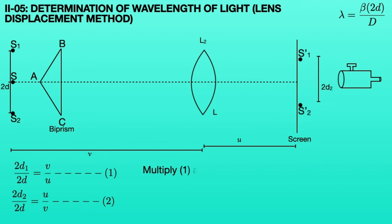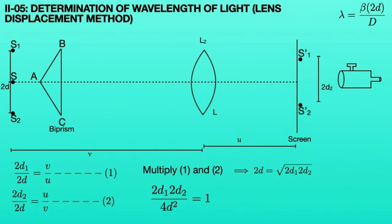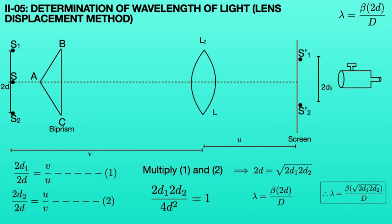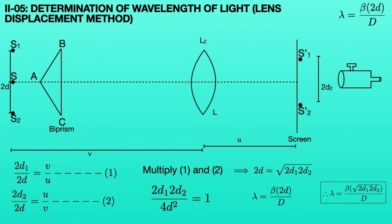When multiplying equations 1 and 2, on the right hand side V/U and U/V cancel each other and it becomes 1. As a result, 2D1 times 2D2 divided by 4D squared is equal to 1. Hence, we can write 2D is equal to the square root of 2D1 times 2D2. Substituting this 2D value into the wavelength formula lambda equals beta times 2D divided by capital D, the formula becomes lambda equals beta times the square root of 2D1 times 2D2, whole divided by capital D. Hence, by using the lens displacement method, we can determine the monochromatic wavelength of the light source.